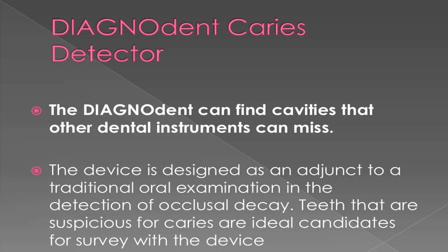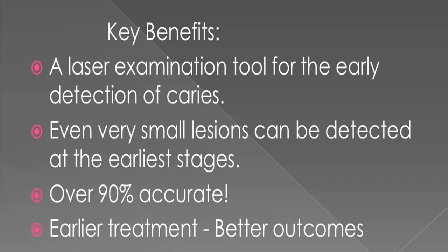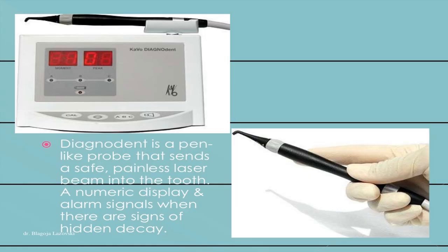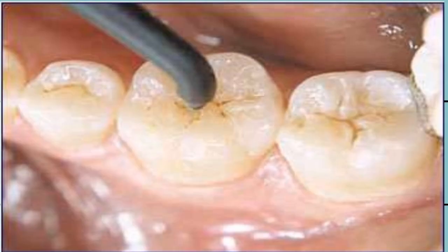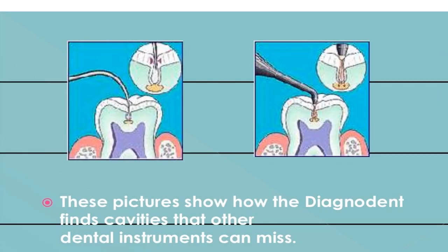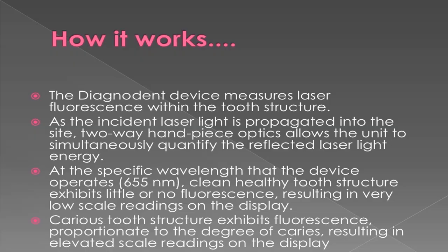Microdentistry also provides diagnosis of non-cavitated caries to arrest demineralization and promote remineralization of enamel, and can bond ceramic orthodontic brackets. The Diagnodent can find cavities that other dental instruments can miss. The device is designed as an adjunct to a traditional oral examination in the detection of occlusal decay. Teeth suspicious for caries are ideal candidates. Key benefits: a laser examination tool for early detection of caries; even very small lesions can be detected at the earliest stages; over 90% accurate; earlier treatment means better outcomes.